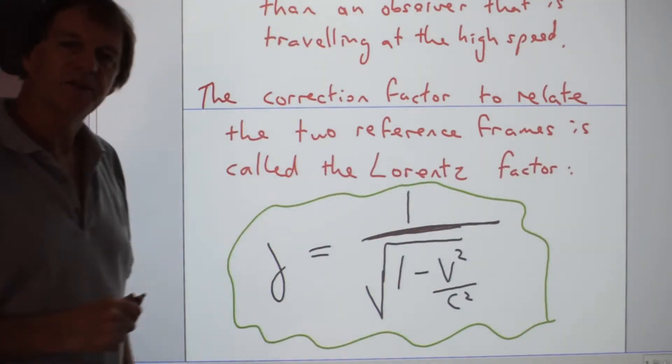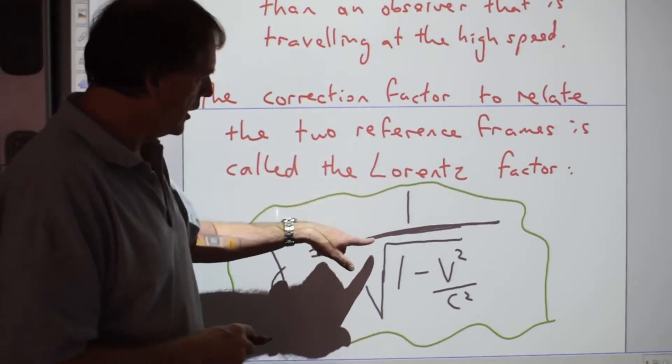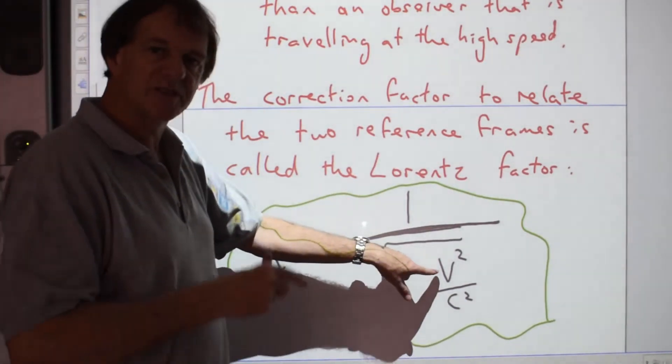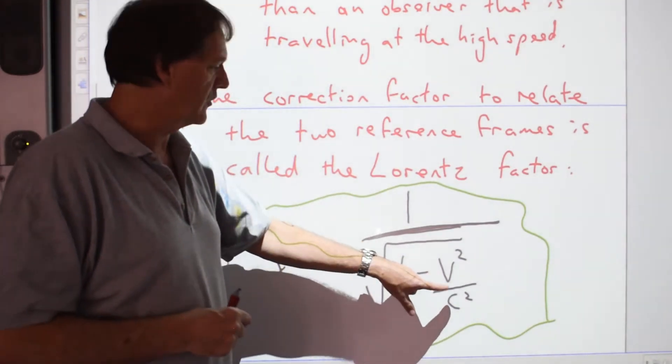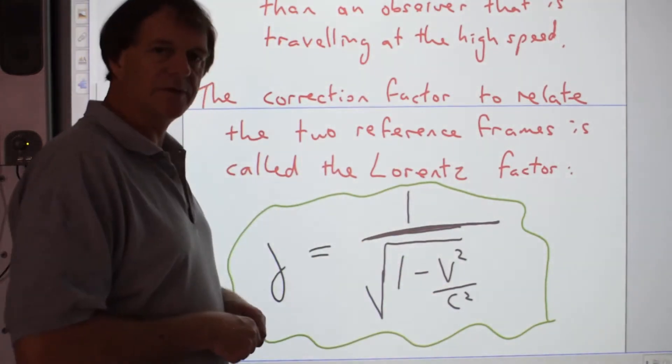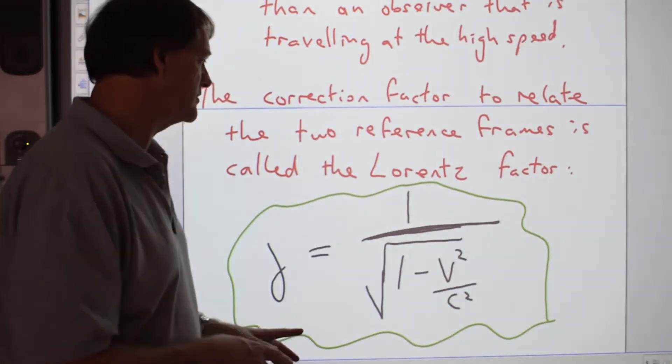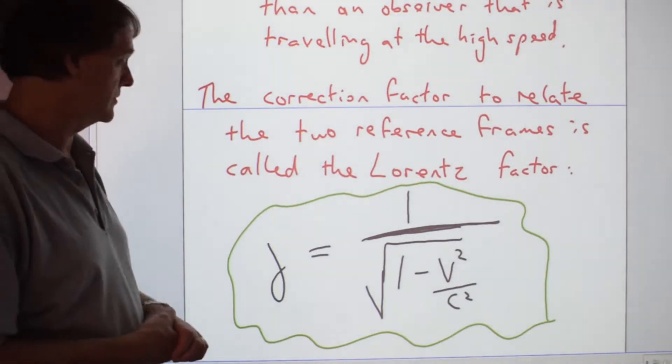The Lorentz factor is gamma and it's given by 1 over the square root of 1 minus v squared, which is the speed of that moving object relative to us, normally for high-speed things this is noticeable, divided by c squared, the speed of light. That factor will actually help us correct for time dilation.